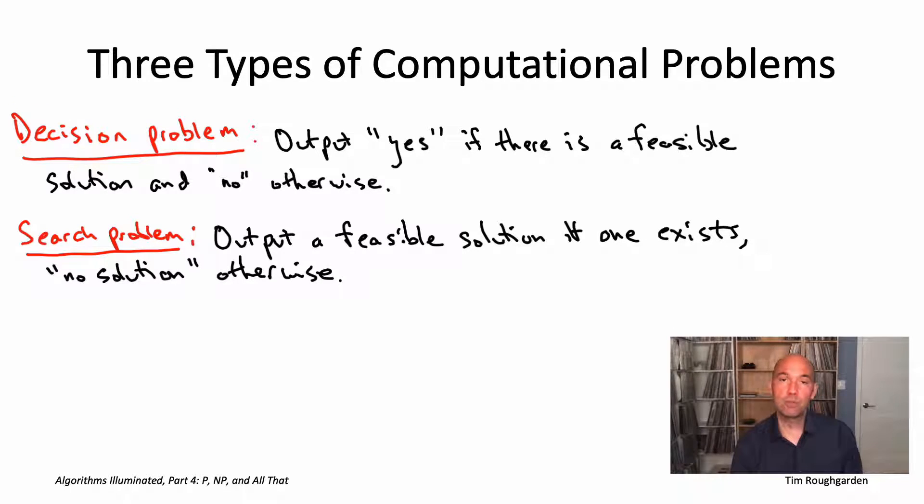We've seen several search problems in this video playlist. SAT and 3SAT are canonical versions where I give you a bunch of disjunctions of literals, and you either have to report a satisfying truth assignment or correctly report that none exist. Graph coloring was also a search problem: either exhibit a K coloring or correctly report that it's not K colorable.